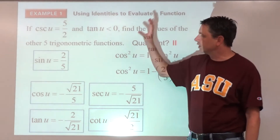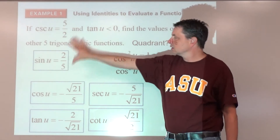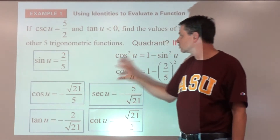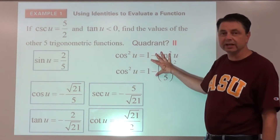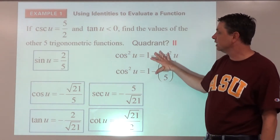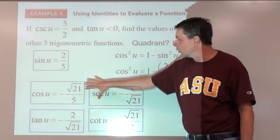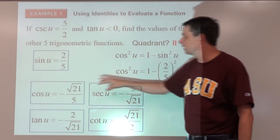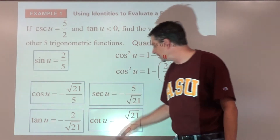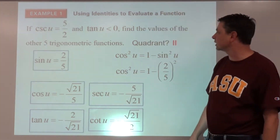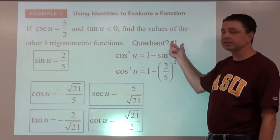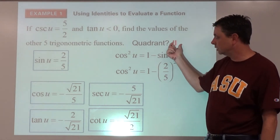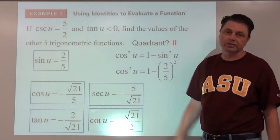So we used the reciprocal identity, the Pythagorean identity, and we were aware of the quadrant — and therefore the sign of our answers — based on being in quadrant two, plus some more reciprocal identities.